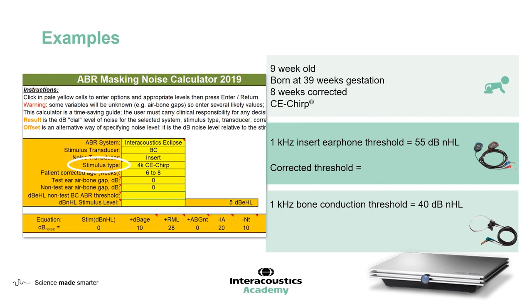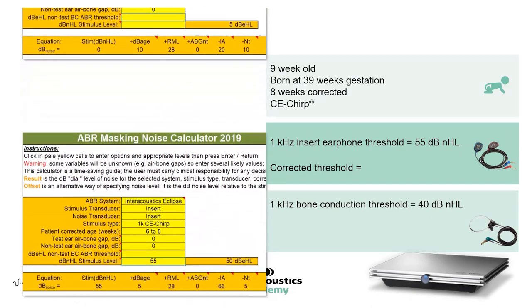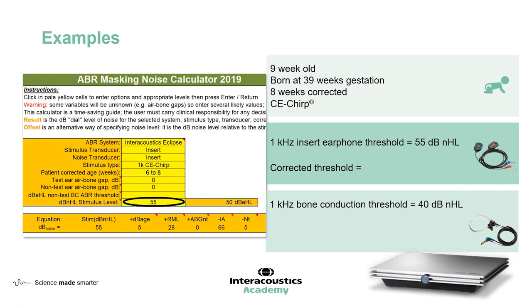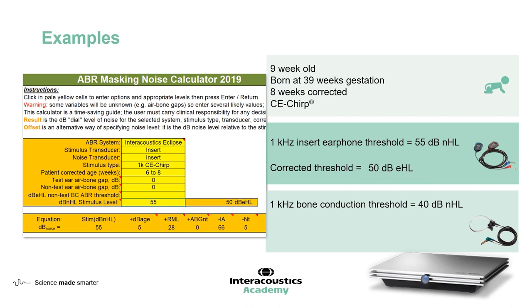We've tested using one kilohertz insert earphones and found a threshold of 55 dB nHL. Because that was a hearing loss, we've gone on to perform bone conduction testing, also at one kilohertz, and found a threshold of 40 dB nHL. The beauty of the masking calculator is you don't actually need to think about the correction factors — it just tells you the corrected threshold. Here we can see that we've got inserts, our one kilohertz CE chirp, the corrected age of six to eight weeks, and our threshold of 55 dB nHL. This gives us on the right-hand side a corrected threshold of 50 dB EHL.